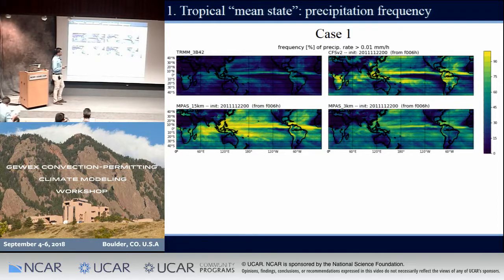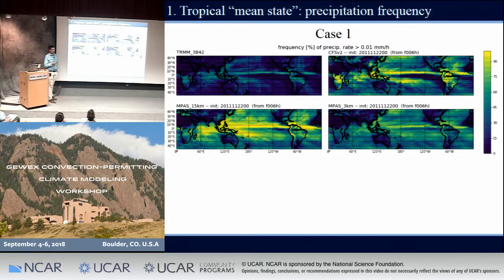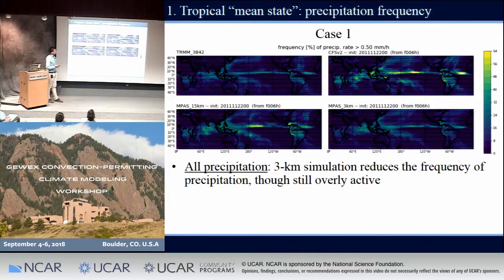Now what about precipitation frequency? We're looking at the percent of time during this 28-day period that precipitation rate exceeds 0.01 mm/hr. What immediately stands out is that both CFS and our 15-kilometer MPAS show precipitation far too frequently compared to TRMM — it's raining almost all the time, a very commonly observed problem in models with parameterized convection. When we go to 3 kilometers, we reduce that frequency by quite a bit and it looks a lot more like TRMM, though 0.01 mm/hr is very small and may not be a fair comparison. Stepping up to 0.5 mm/hr, the parameterized runs still show too much tropical convection, while our 3-kilometer MPAS looks pretty good compared to TRMM.